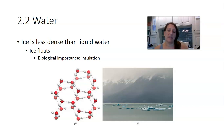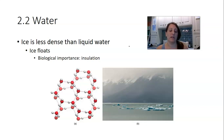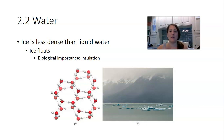So that ice sitting on top, because it floats, allows life underneath it to persist. That ice on top also provides a barrier, a layer of insulation, protecting the water underneath from the cold air. The temperature inside those bodies of water doesn't fluctuate too much, allowing life to exist inside of them. That's how it's biologically relevant in those types of systems.